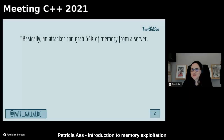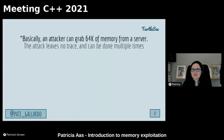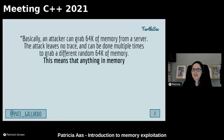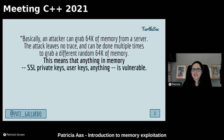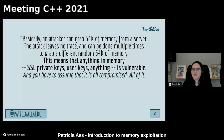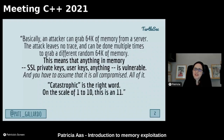I'm going to read to you a bit from a blog post that came out many years ago. Basically an attacker can grab 64k of memory from a server. The attack leaves no trace and can be done multiple times to grab a different random 64k of memory. This means that anything in memory — SSL private keys, user keys, anything — is vulnerable. You have to assume that all of it is compromised. Catastrophic is the right word. On a scale from 1 to 10, this is an 11.